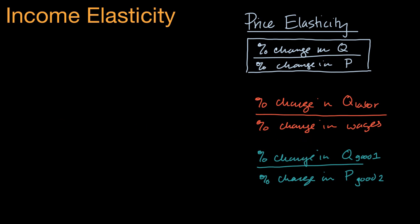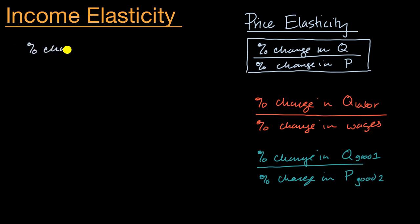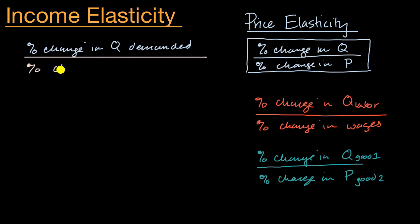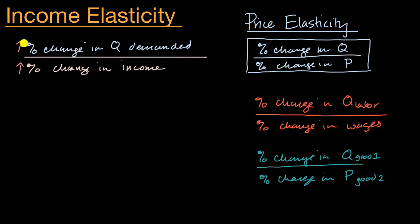But the focus of this video, as you can imagine — because it was already written down in a clean font right over here — is income elasticity. Here, we're going to think about the income elasticity of demand. You could imagine what that would be: this is going to be our percent change in quantity demanded divided by — instead of the percent change in price of that good or service — the percent change in income of the people who might be in the market for that good.